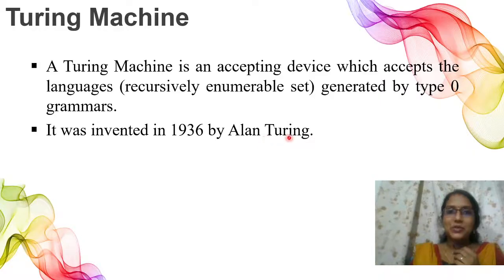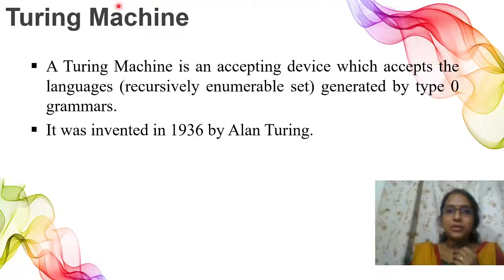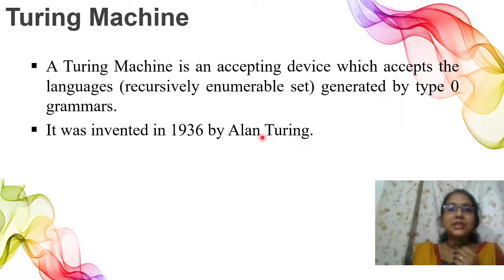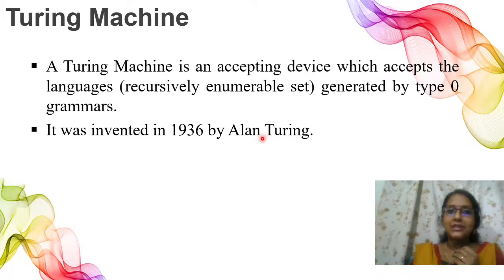Alan Turing is a scientist. The Turing Award, named after him, is known as the Nobel Prize of Computer Science — it is the top award in the field of computer science.